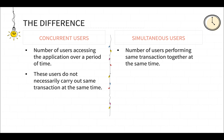Concurrent users are the number of users accessing the application over a period of time. Let's say your application has functionality like a home page, a login functionality, and a search functionality. At one particular moment, one user can be on the home page, at the same time another user can be on the search operation, and at the same time user 3 may be doing the login operation.